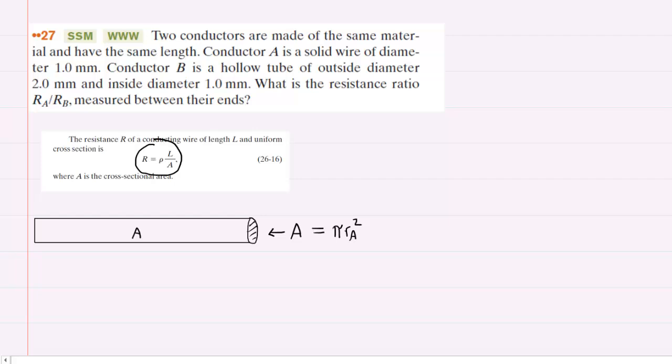So for wire A, or conductor A, which is simply a solid wire, we know that the resistance A would equal the resistivity value multiplied by the length of that wire divided by pi times the radius of that wire squared. So we've used a subscript A to denote the radius for wire A.